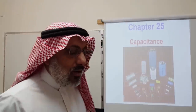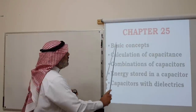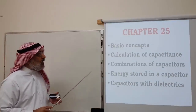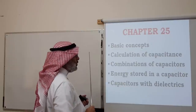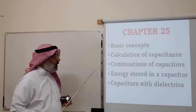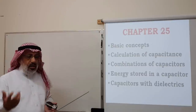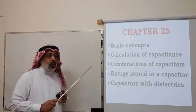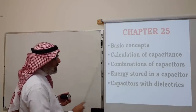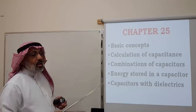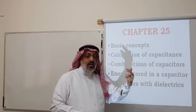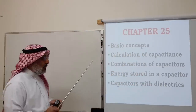In chapter 25 we have these ideas. We will start with some basic concepts: what is capacitance, what is a capacitor, and how to calculate the capacitance of a capacitor. Then we will consider combinations of capacitors, after which we will talk about the energy stored in a capacitor — one of the most important functions of capacitors in electric circuits. Finally, we will consider capacitors with dielectrics, which are insulators.